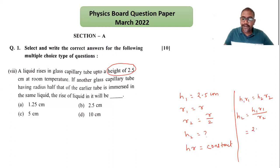So h1 is 2.5, r1 is r, and r2 is r/2. The r values cancel, so it is 2.5 multiplied by 2, which equals 5 cm.